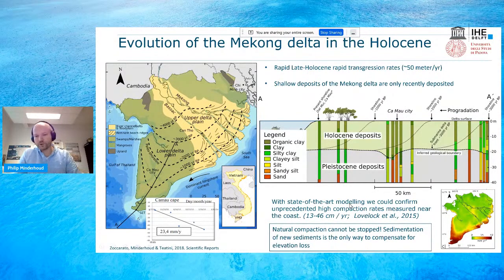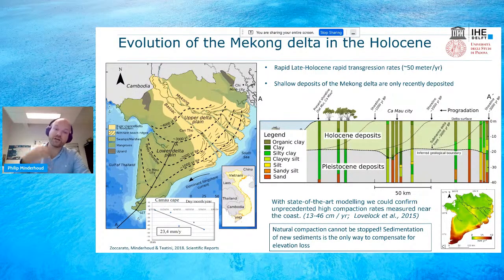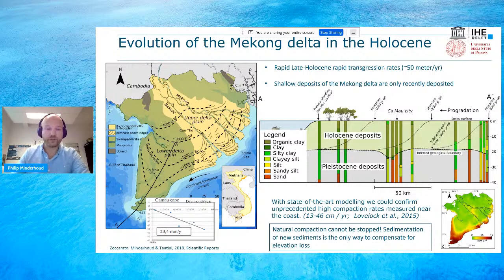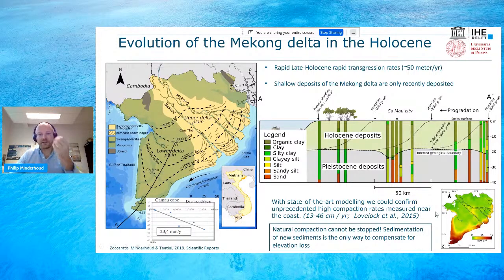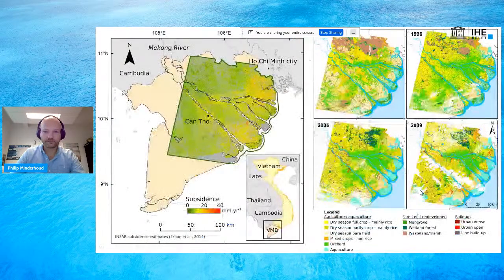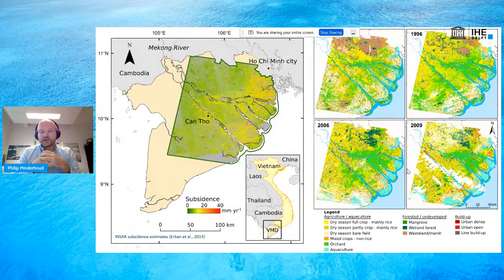This natural compaction factor is important to know because it is not something you can stop — the only way is adaptation, bringing in new sediments to compensate for continuous elevation loss, which is also the natural mechanism that deltas in a normal situation would use to sustain their coastlines. Our first estimate of natural compaction shows especially high signals along the coastlines, which is where we have very high natural compaction occurring.